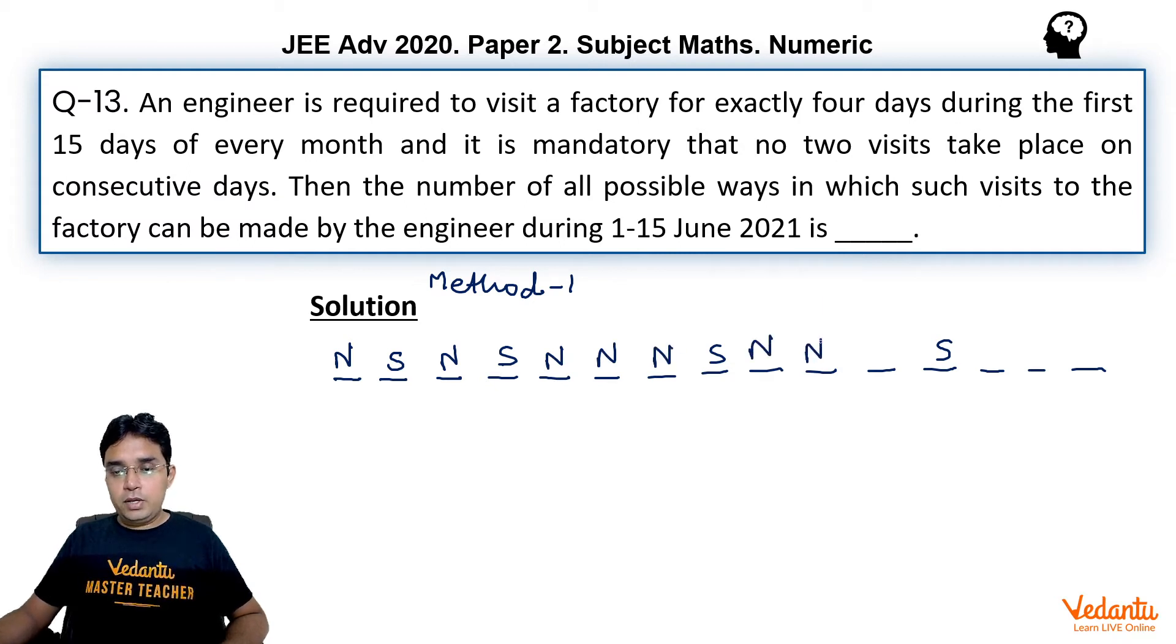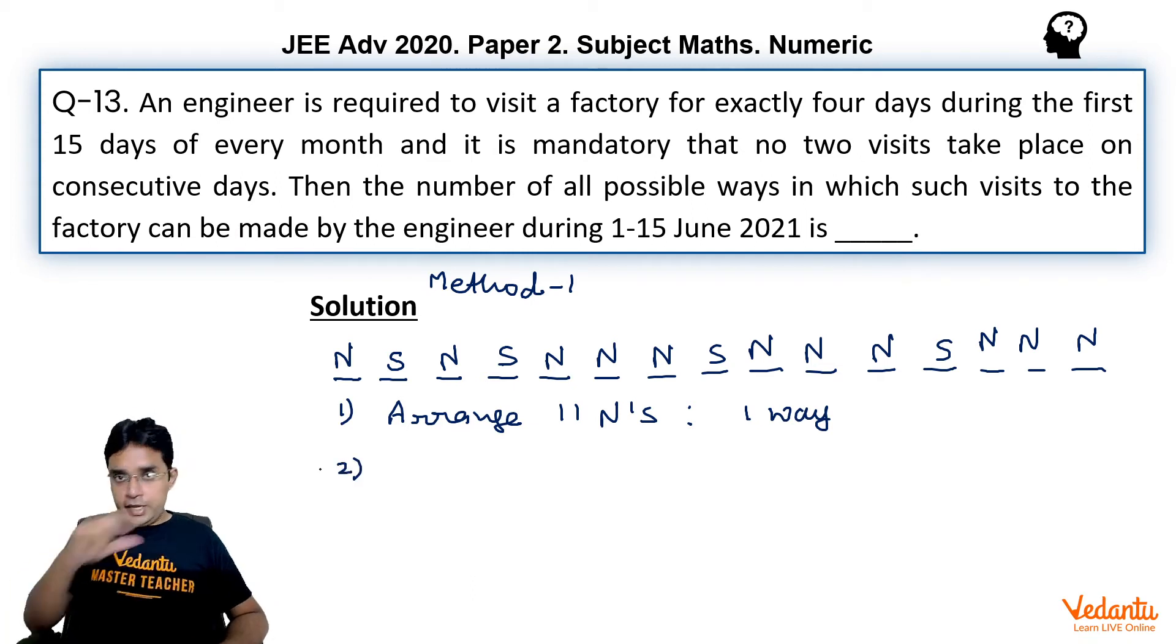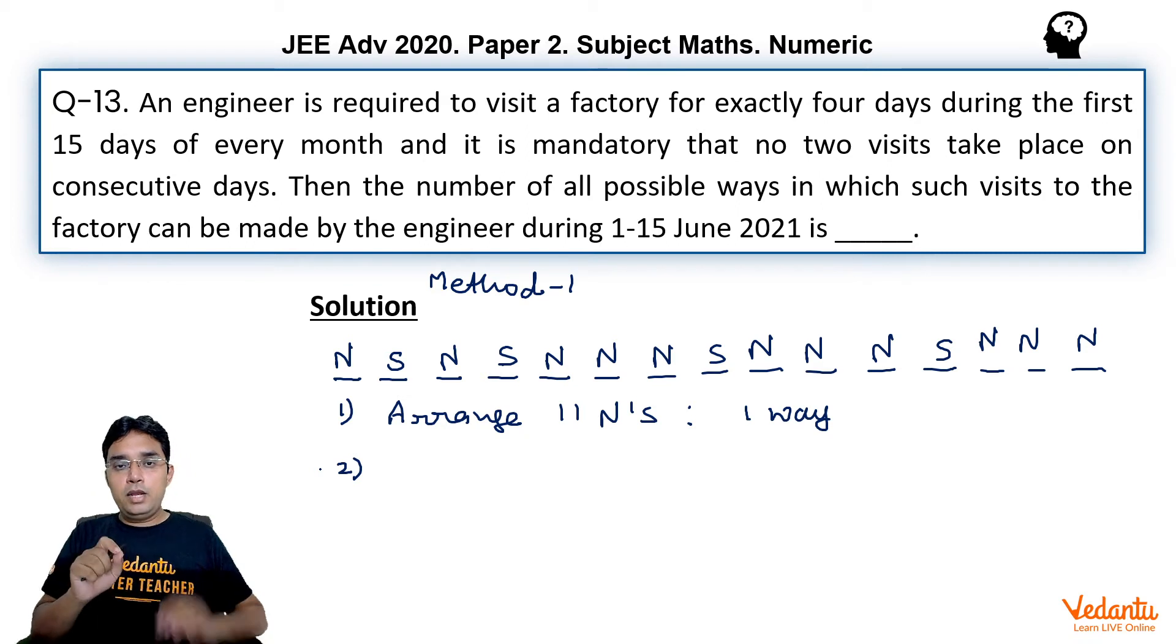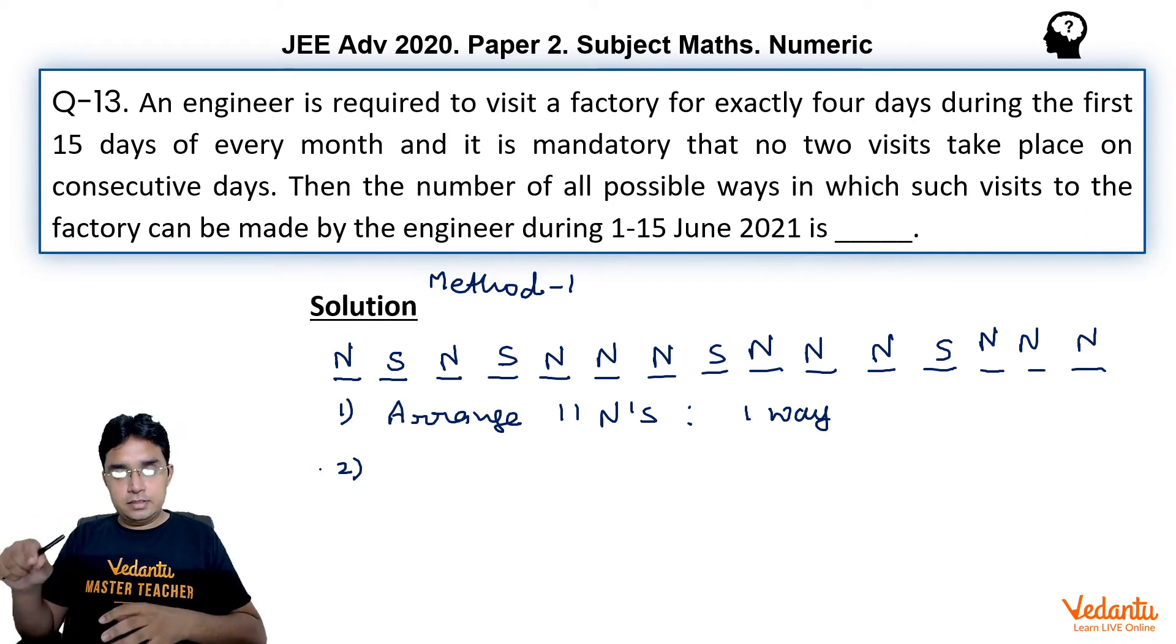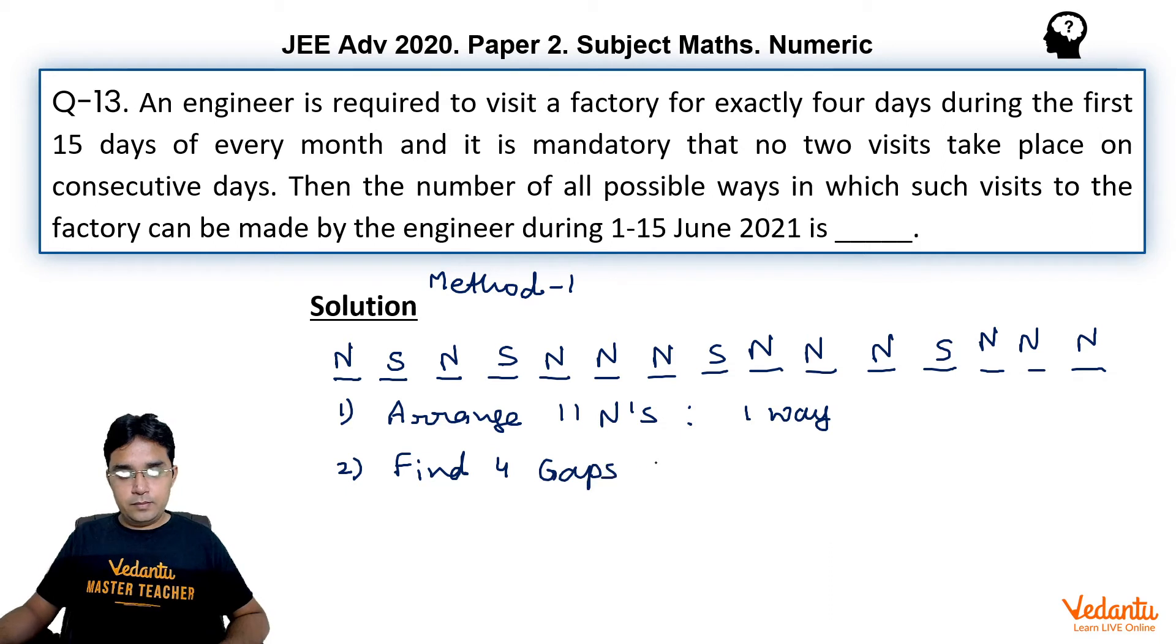This question now is equivalent to arranging 11N and 4S in a row so that no 2S are consecutive. This question can be done in 3 steps. Number 1: arrange 11N and these will be arranged in only one way because all N are identical. Then if you arrange 11N you have 10 gaps in between and you have 1 gap on the left and 1 gap on the right. So there are total 12 gaps on which if we put any one of the S, we will make sure that no 2S are consecutive. So we need to find 4 gaps out of 12 gaps on which we are going to put S and that will be done in 12C4 ways.